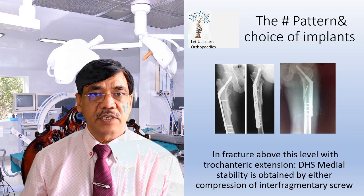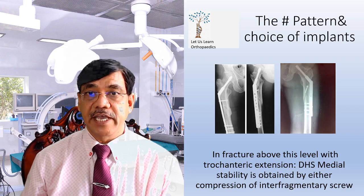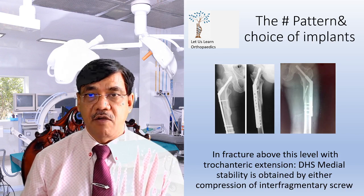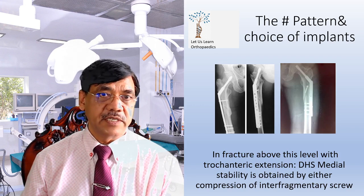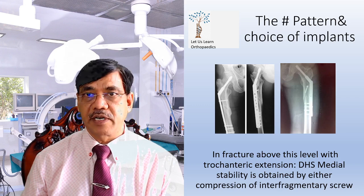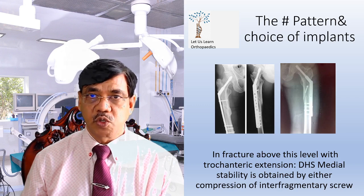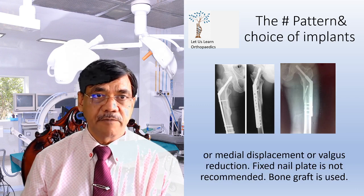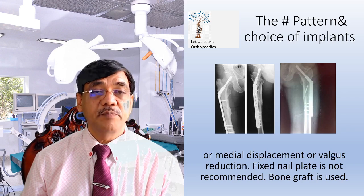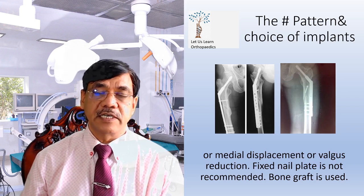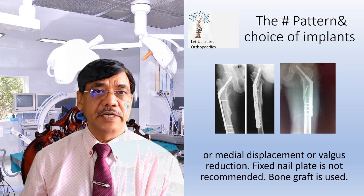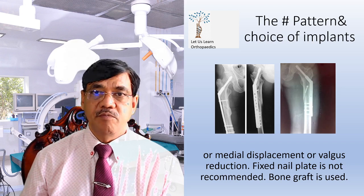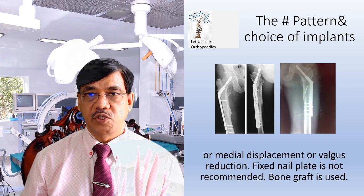For fractures above this level with trochanteric extension, DHS has to be used. Rigid stability is obtained by either compression of interfragmentary screws, medial displacement, or valgus reduction. Fixed nail plate is not recommended. Bone graft is used.